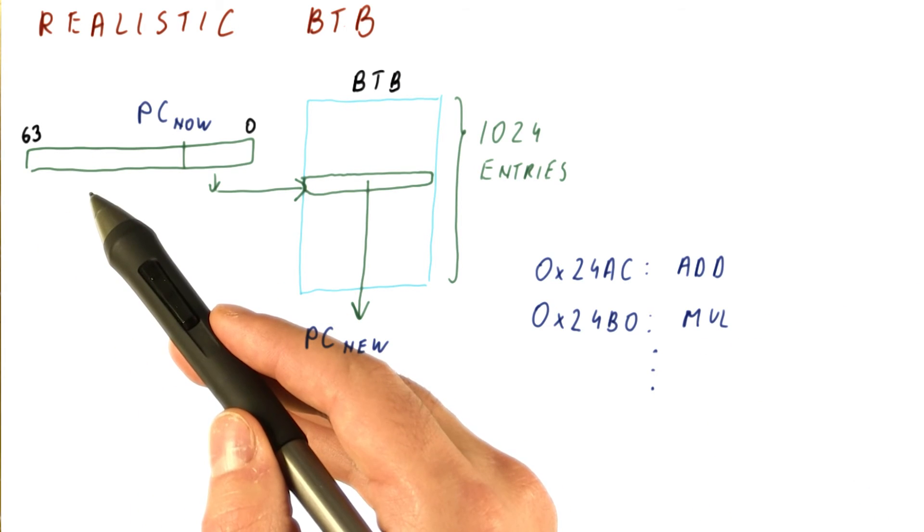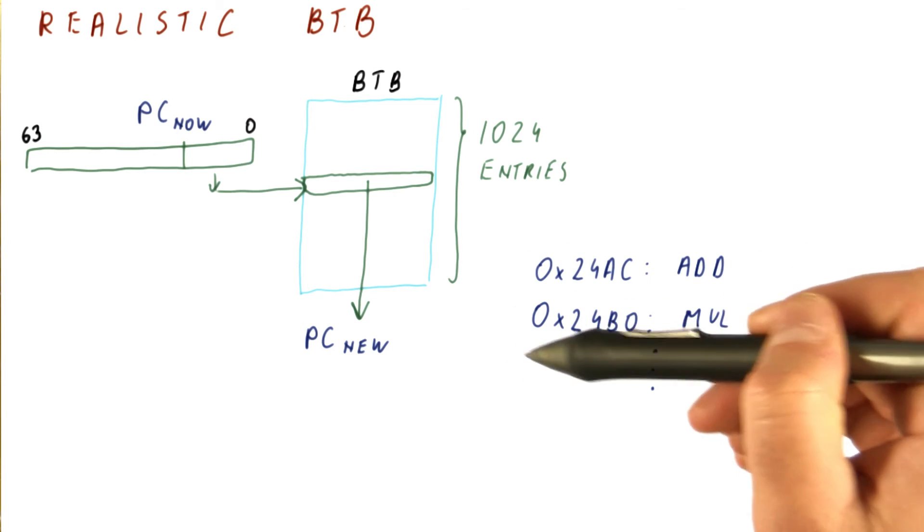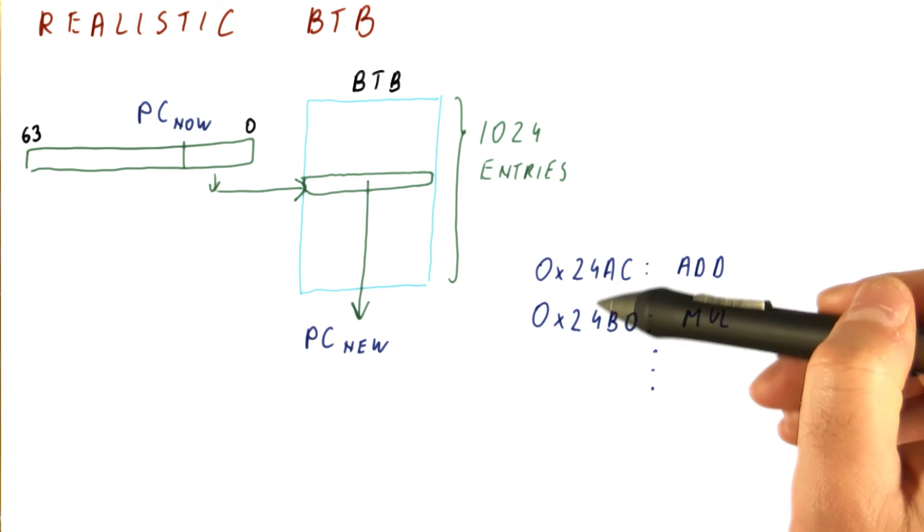So if we were using the most significant bits of the PC, all instructions that are in the same part of the program would map to the same entry because they have the same most significant bits.